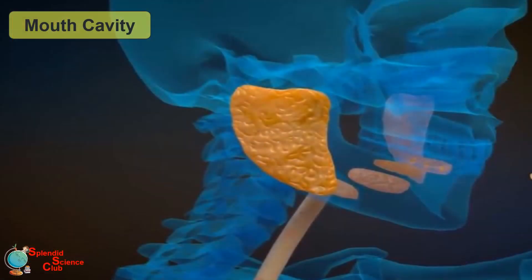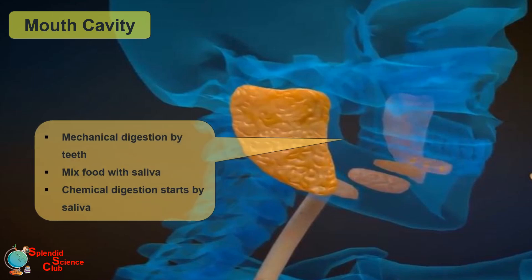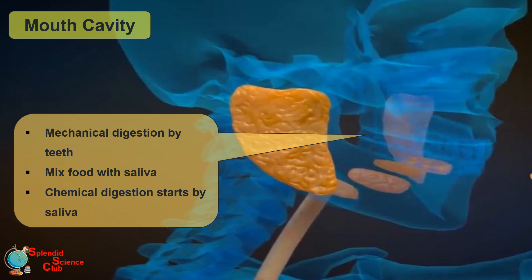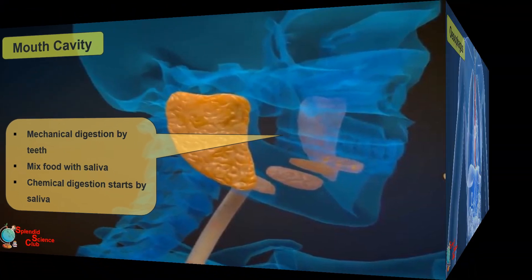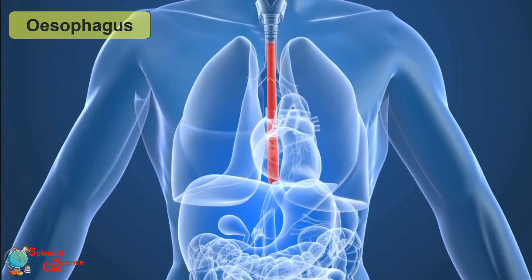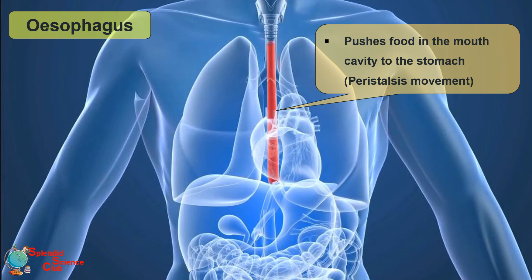The first step of digestion is done by teeth and tongue with the help of saliva. Teeth can tear, crush, and grind food. The food mixes with saliva and chemical digestion begins, carried out by an enzyme called amylase. Then the food bolus is pushed into a tube called the esophagus, and food is moved to the stomach through the esophagus by peristalsis movement.